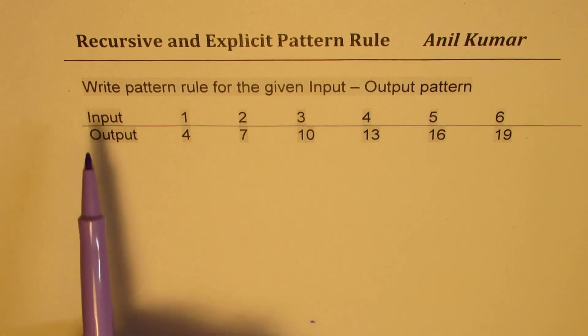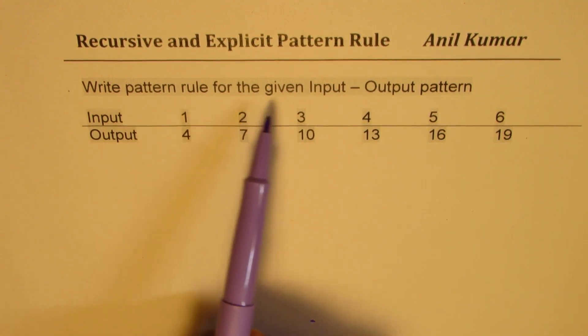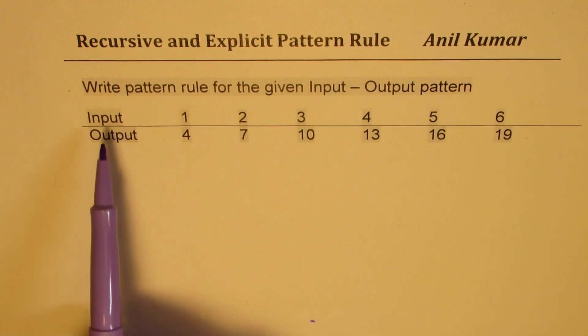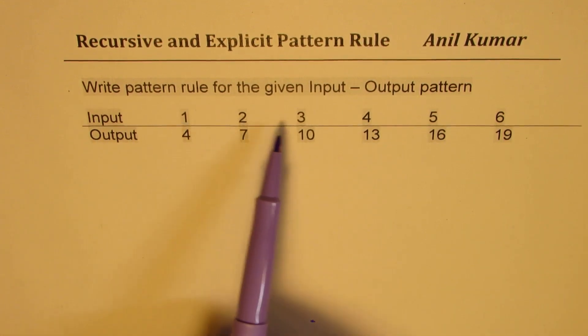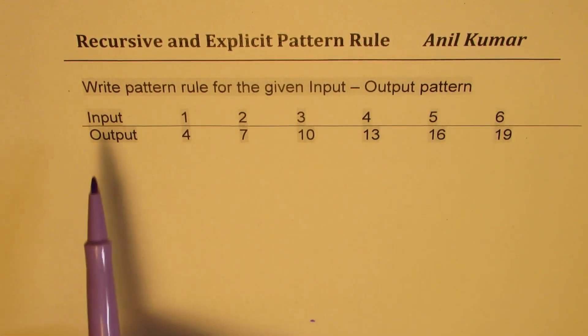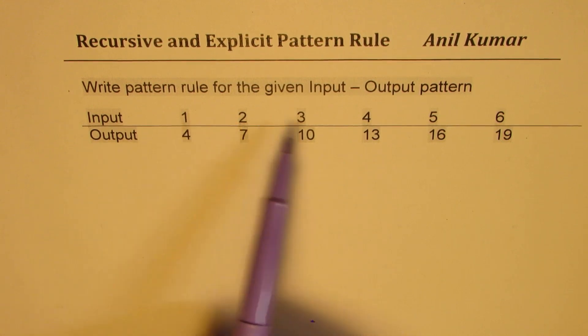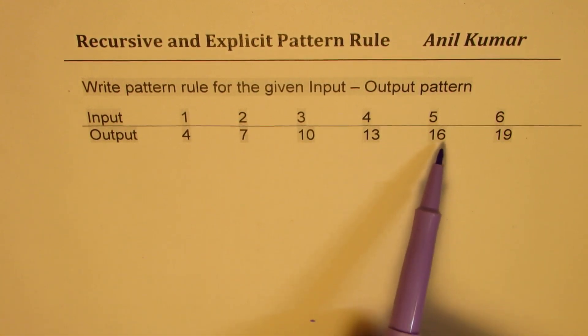What we need to do here is to write a pattern rule for the given input-output pattern. So inputs are 1, 2, 3, 4, 5, and 6. The outputs for these inputs are 4, 7, 10, 13, 16, 19.